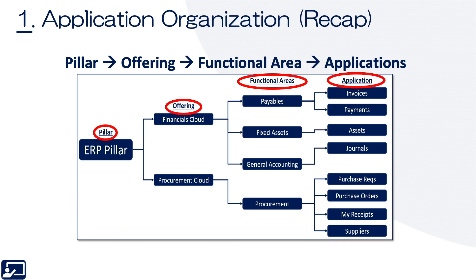First topic: Application Organization. Let's start with a quick review of how Oracle organizes its Software-as-a-Service applications. Oracle Cloud uses pillars at the highest level. Each pillar has one or more offerings. Each offering has one or more functional areas. And each functional area has one or more applications. To learn more about Oracle's Application Taxonomy, watch the Application Organization lesson within the Oracle Cloud Explore course.